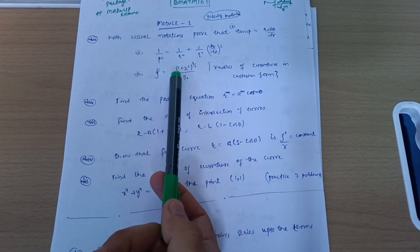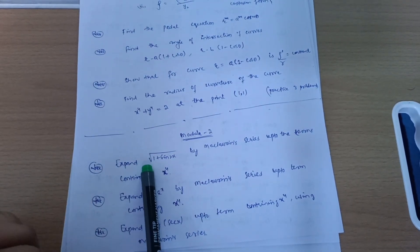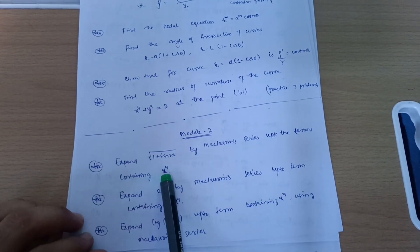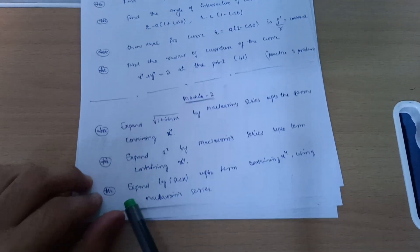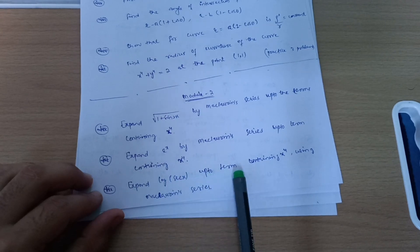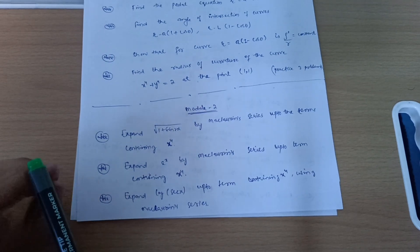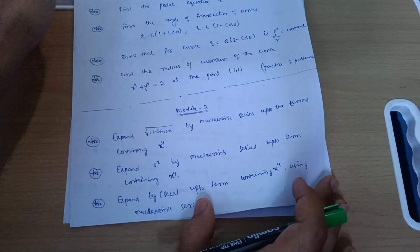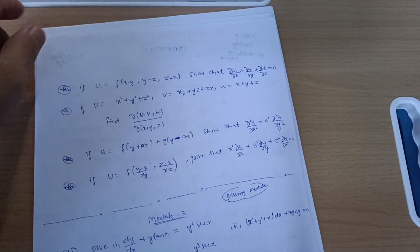These three derivations are super important, so you should not leave them. Next is module two, which includes Maclaurin's series — very easy to cover. Expand √(1 + sin 2x) by Maclaurin's series up to terms containing x⁴; expand e^x by Maclaurin's series up to x⁴; or expand log(sec x) up to x⁴ using Maclaurin's series. My videos are available on this. You can also find other YouTube resources to practice and understand Maclaurin's series. Next we have Jacobians, which are also easier ones.